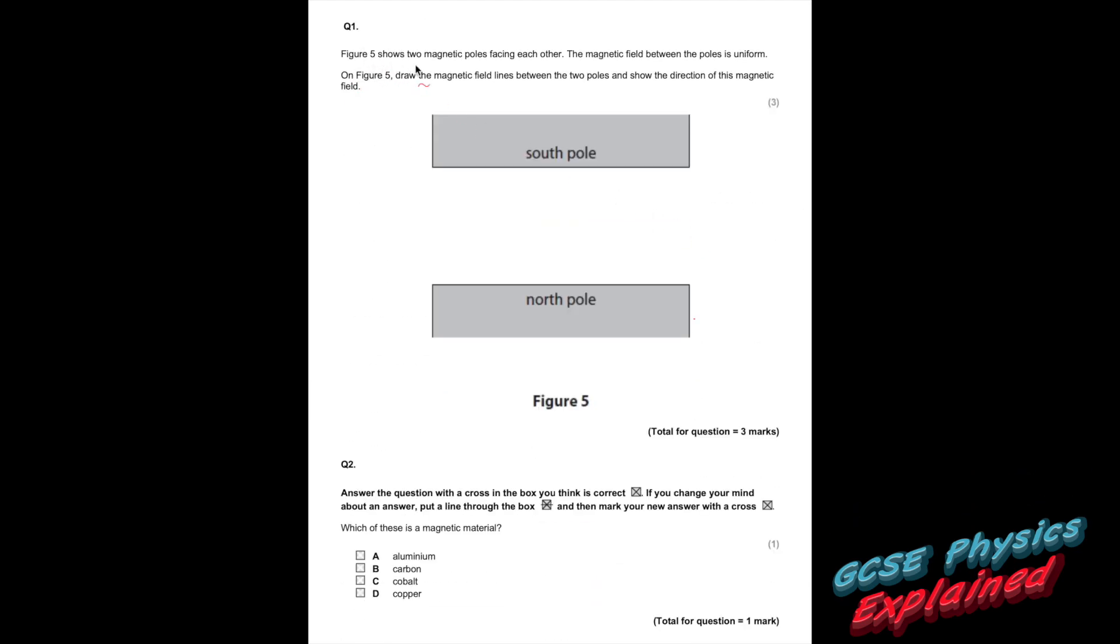Question 1. Figure 5 shows two magnetic poles facing each other. The magnetic field between the poles is uniform. On figure 5, draw the magnetic field lines between the two poles and show the direction of this magnetic field. Well, if it's uniform, that basically means that you need to draw straight lines, equidistant apart, which means equal distance apart. And the only other thing that you need to do is make sure you draw at least three lines and show the direction of the magnetic field, which always goes from the North Pole into the South Pole. Three marks. Easy.